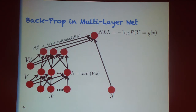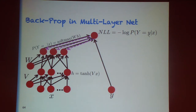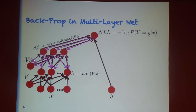The backprop phase computes gradients starting at the output node, applying the chain rule so that at each node we look up successors and compute the derivative of NLL with respect to each node. Once we have gradients for the output nodes, we compute gradients for the parameters, then for the hidden units, and so on.